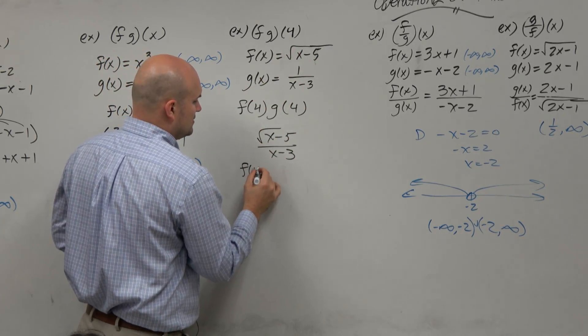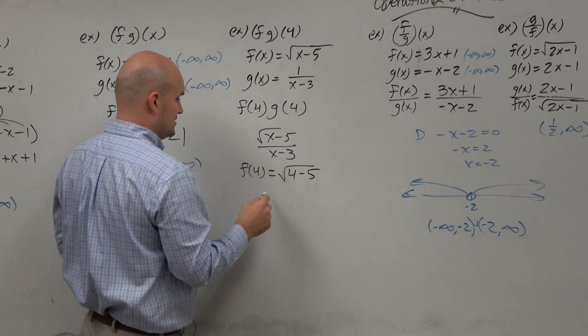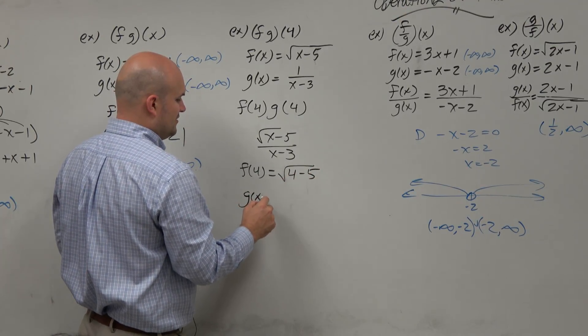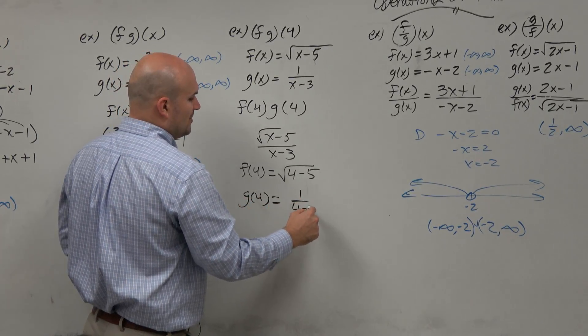So if you plugged in 4 for f of 4, you would get 4 minus 5. And then you have g of 4, which is 1 over 4 minus 3.